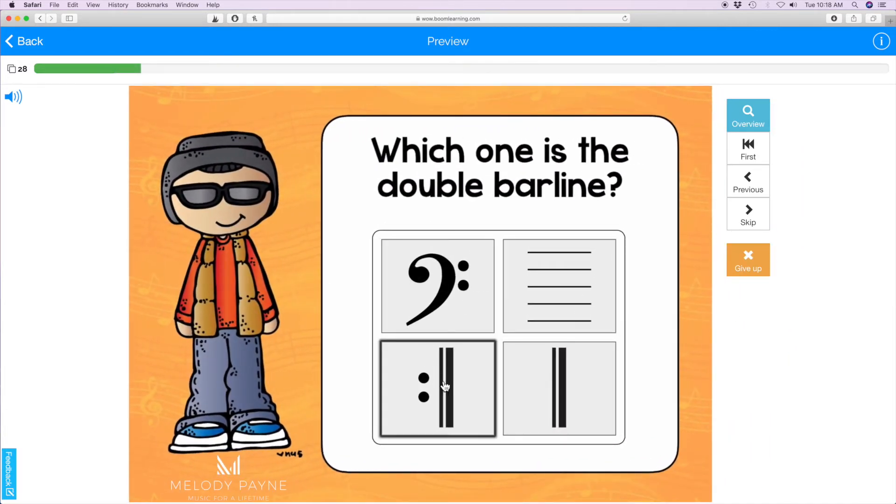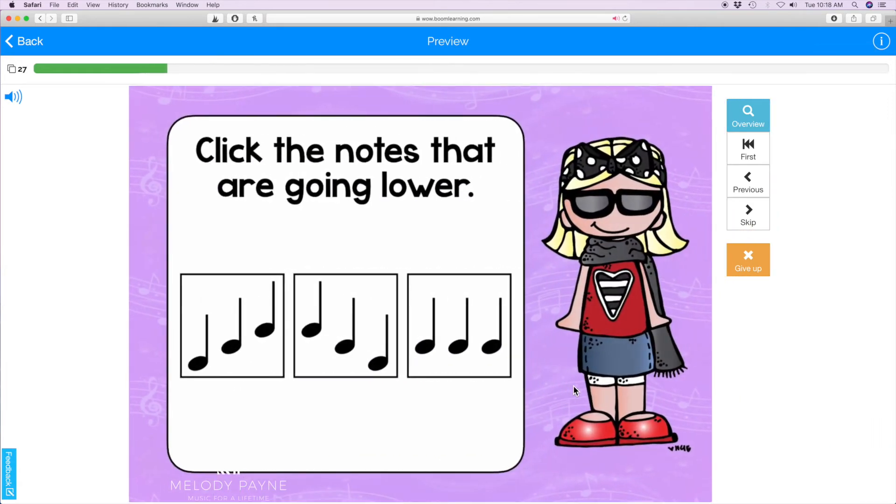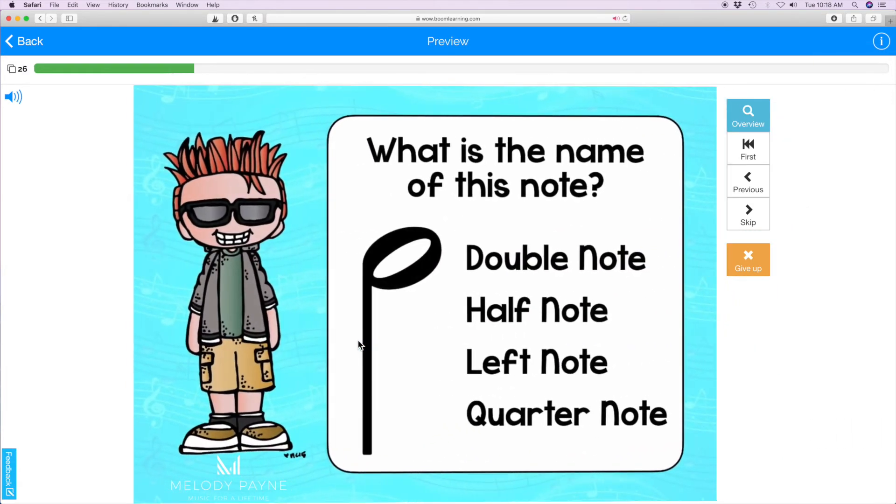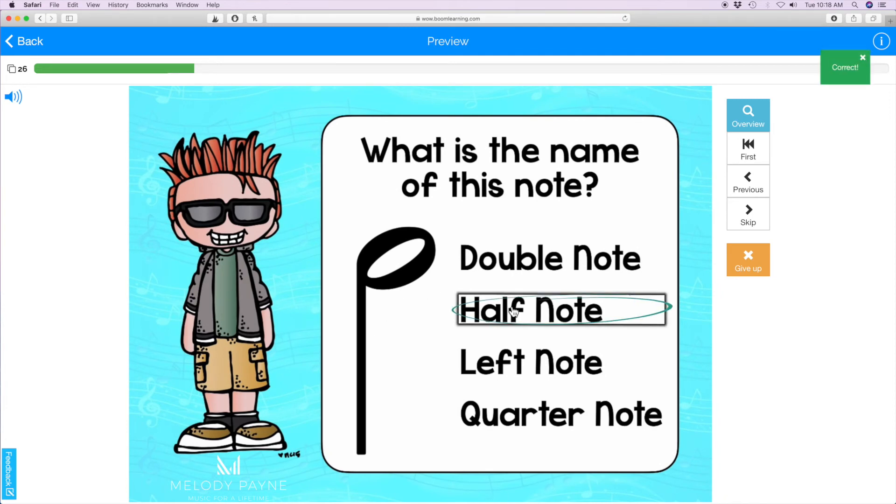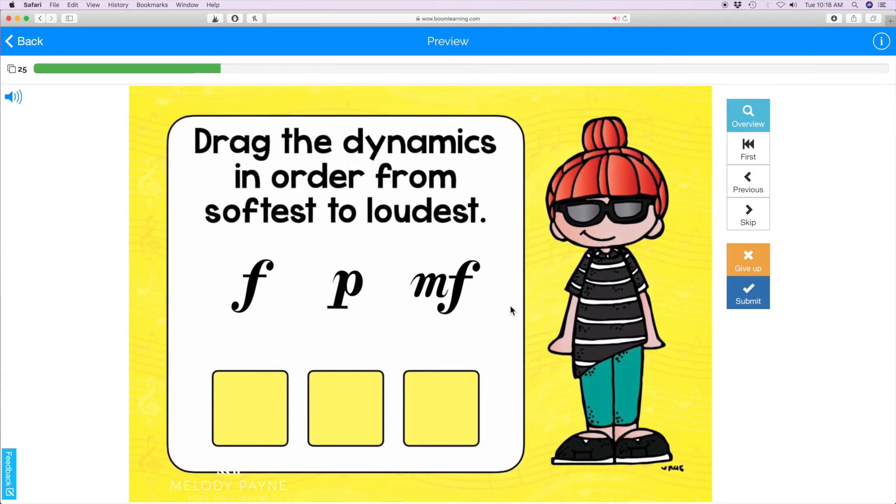Another multiple choice—whoops. And here is a drag-and-drop: drag the dynamics in order from softest to loudest. So let's imagine that the student misunderstood and thought it said loudest to softest. So they will click and drag into the box and click submit. Whoops!